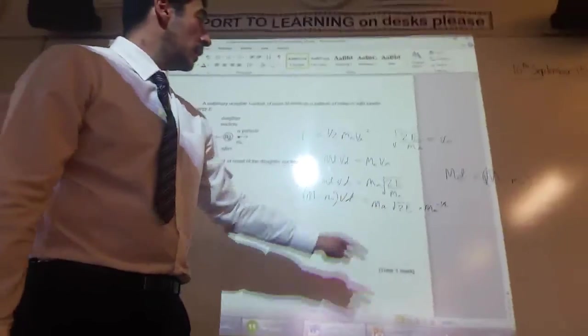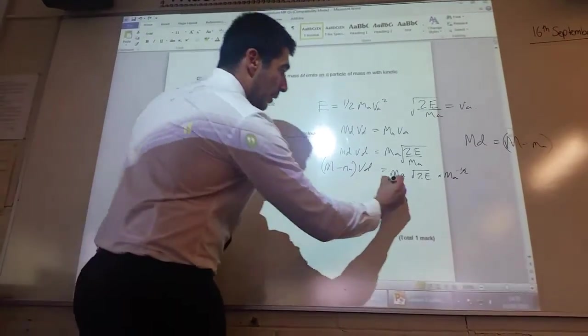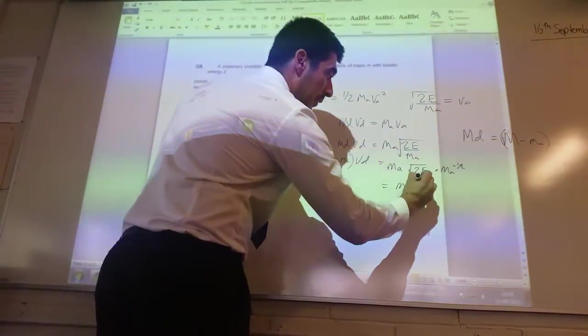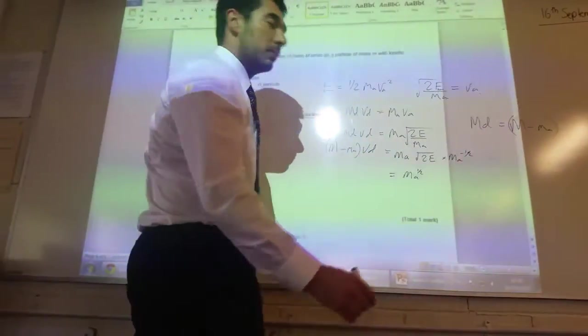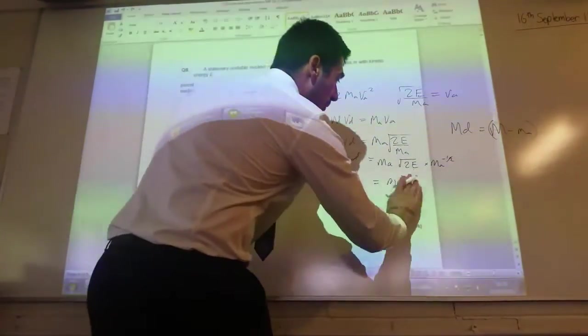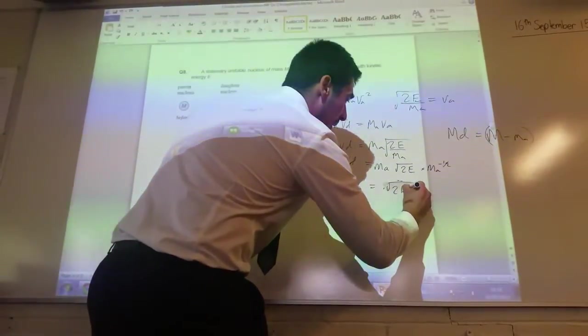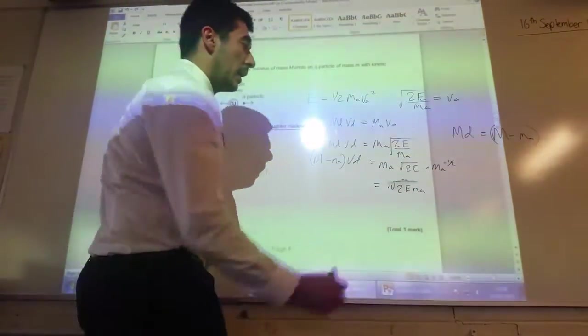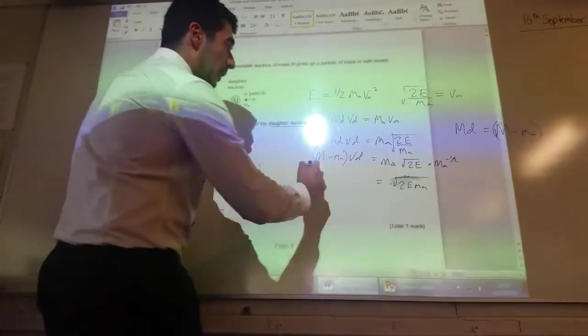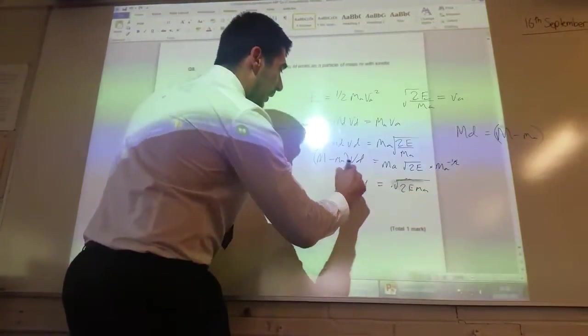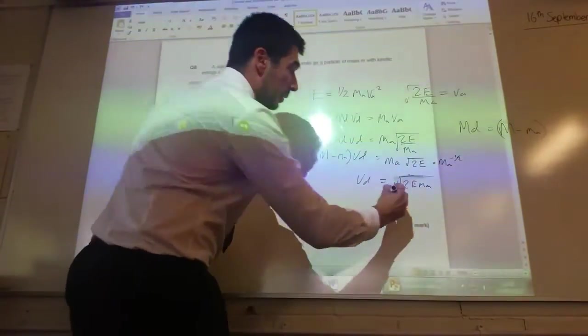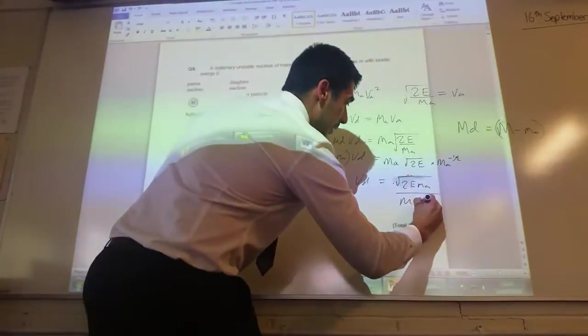So that becomes MA to the half, multiplied by root 2E. So MA to the half is the same as root MA. So actually, this whole thing becomes root 2E MA. And then we got that equal to VD times by that term, which I can take over to the side by dividing both sides by M minus MA.